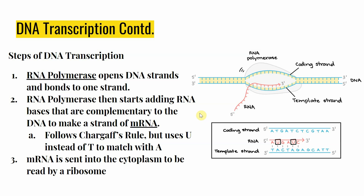Once this copy gets made, the last main step is sending this mRNA into the cytoplasm to be read by a ribosome. That actually leads into the other main process related to the central dogma of biology, which is DNA translation — but we'll talk about that in a separate video. Once we create our molecule of mRNA, we send it out into the cytoplasm to complete the next step.